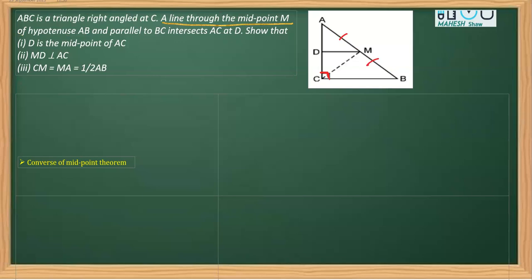From point M, a line DM is drawn parallel to BC, and this line DM intersects AC at point D. In the proof part, what we have to prove is that D is the midpoint of AC.